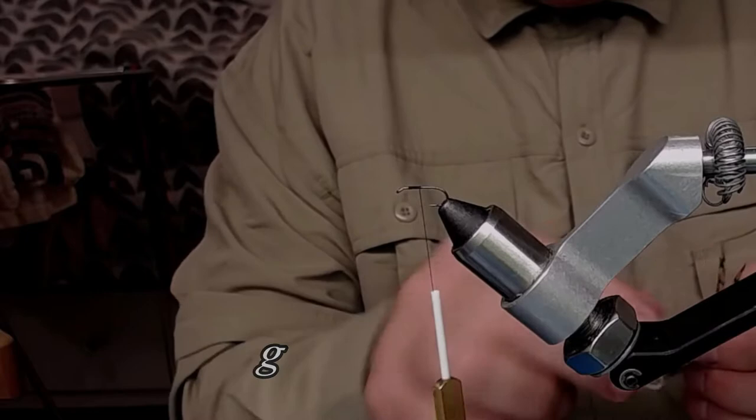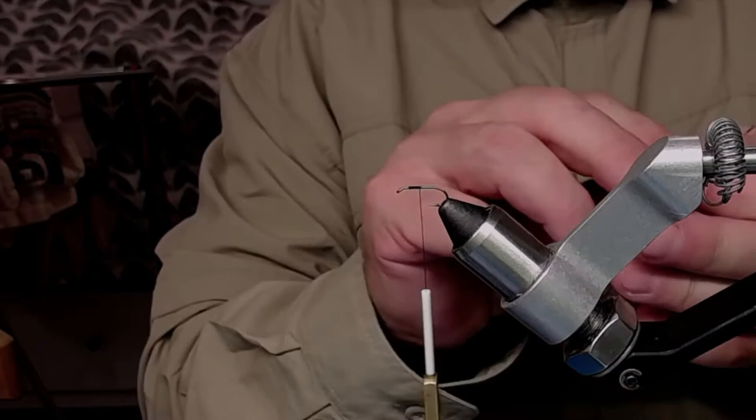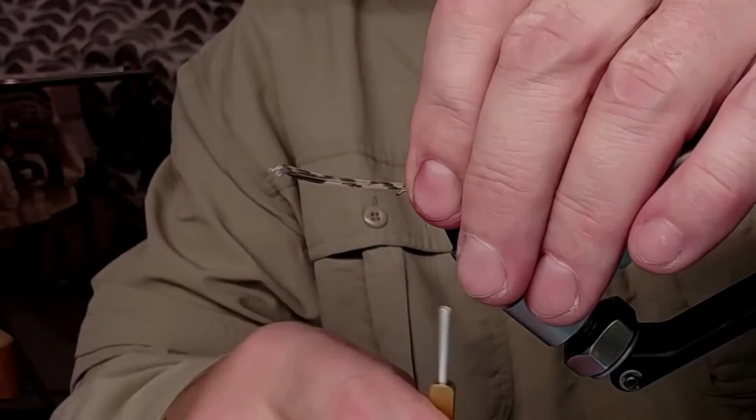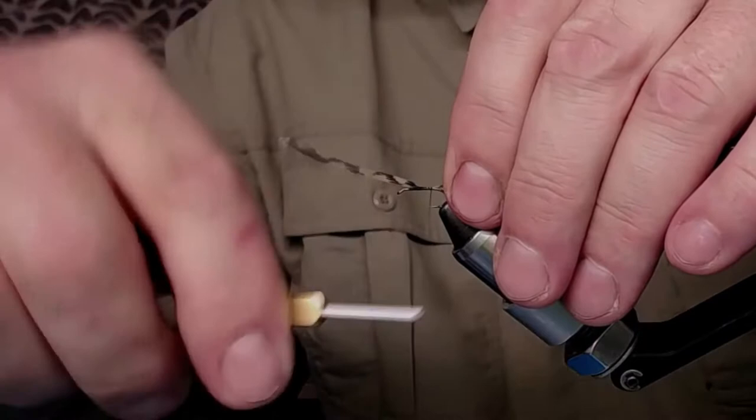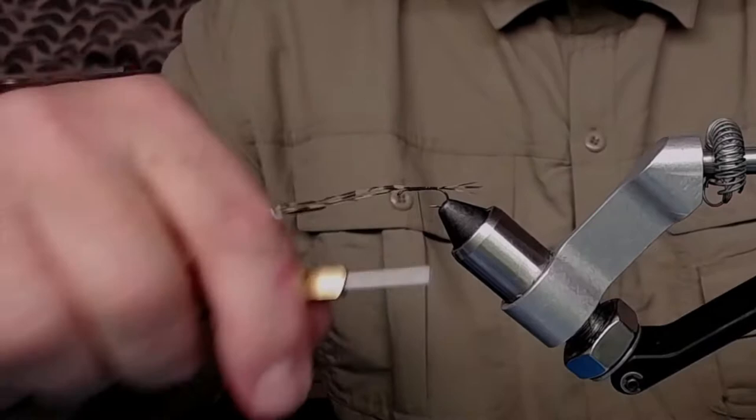I start with taking some fibers off a gold pheasant tail and measure out a couple of those. Measure out the length. Go down, down to the hook bend. Go forwards again. All the way. So we can make a little foundation.